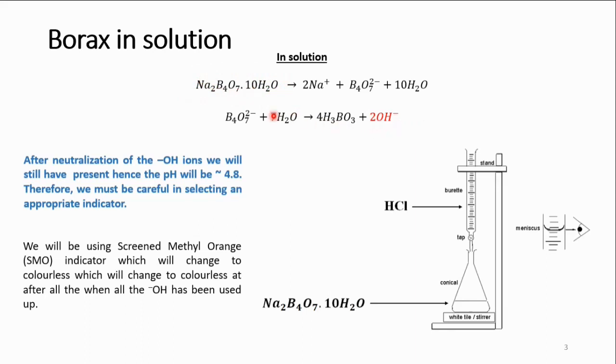So if we have 10 moles of borax, then we will end up with 20 moles of hydroxide ions. So once we know the number of moles of borax that we're working with, then we can easily figure out, via the mole ratio, the number of moles of hydroxide ions.